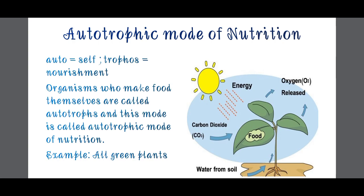The example of autotrophs would be all green plants. All green plants come under autotrophs - they prepare their own food. How they make their food, we will study further in upcoming videos.